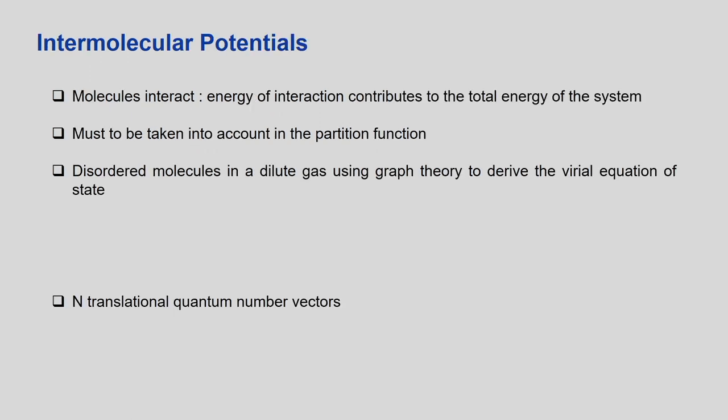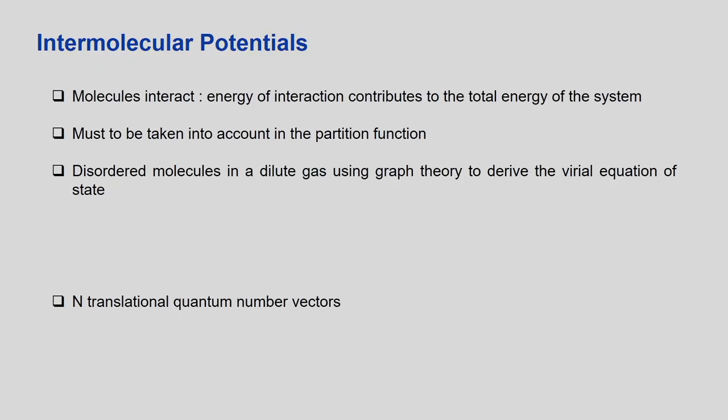We will first define a configurational integral, and the starting point is the intermolecular potential. Before going into the intermolecular potential, we need to understand certain aspects — whether we take a monoatomic or polyatomic gas, and what assumptions are involved when we finally derive the intermolecular potential. We assume that molecules interact and the energy of this interaction contributes to the total energy of the system.